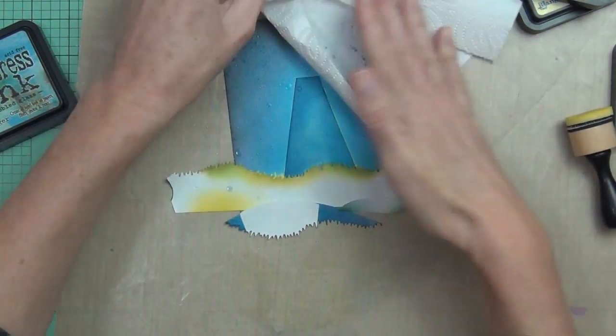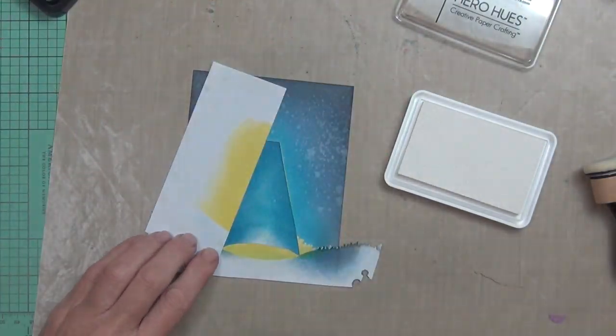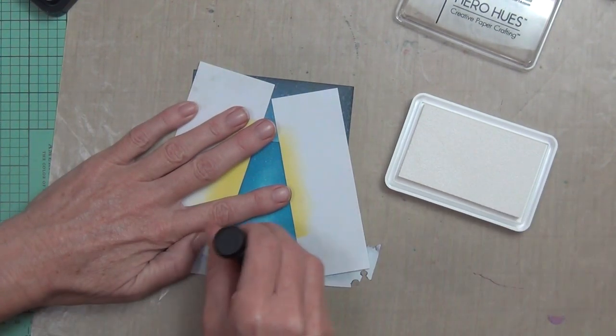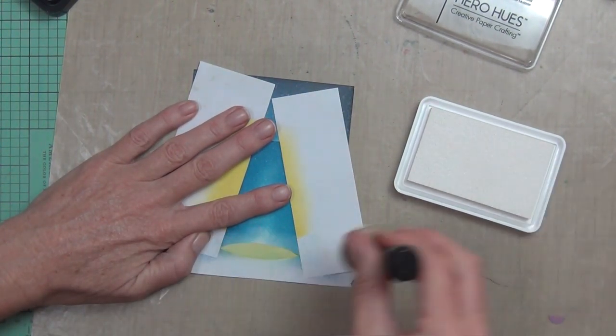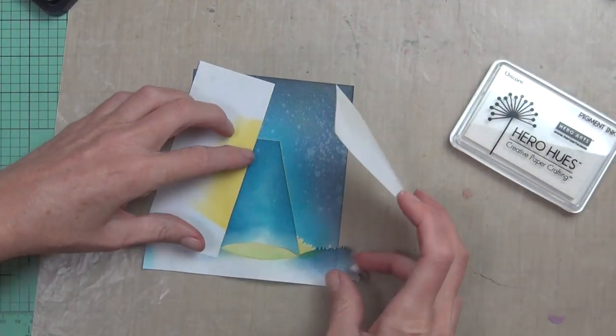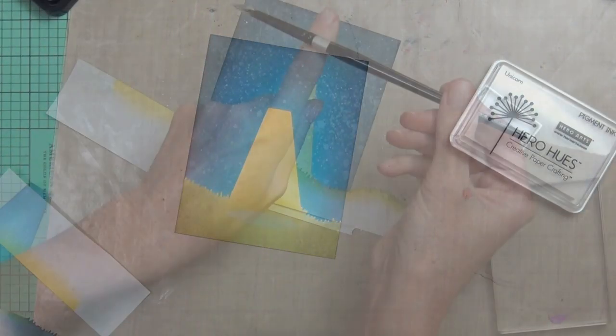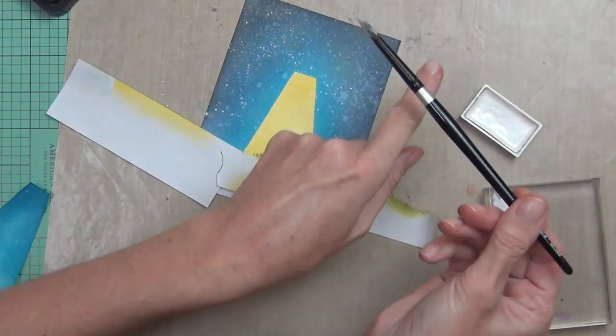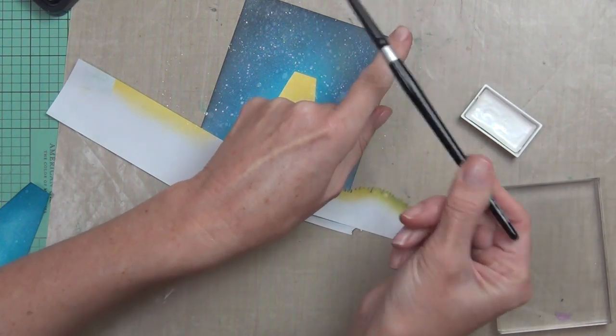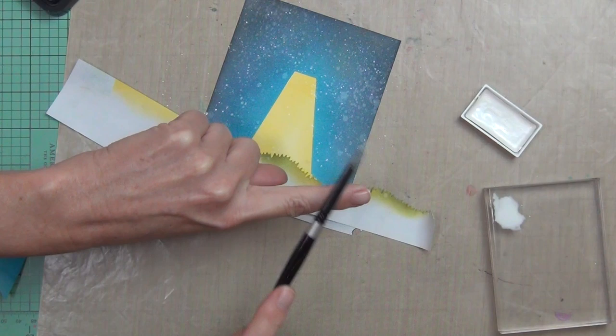I'm using my distress ink sprayer to add some stars to the sky and lifted up the ink just using a paper towel. That's a really good technique, an easy technique to add some texture to the sky.